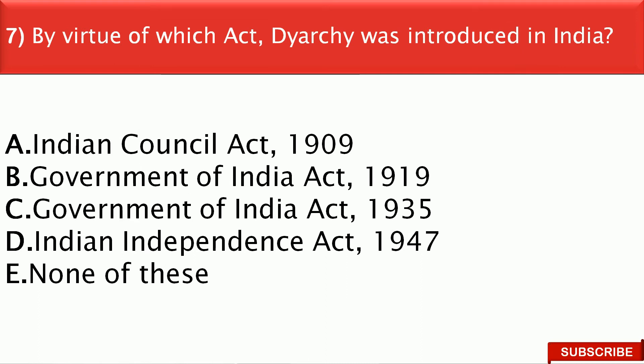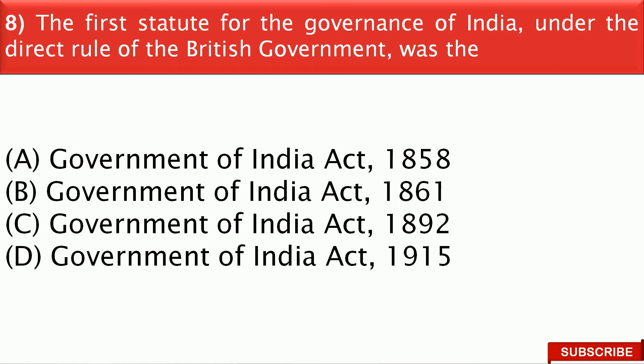Next question: By virtue of which act was Dyarchy introduced in India? The right answer is option B — that is the Government of India Act 1919. Next question: The first statute for the governance of India under the direct rule of the British government was the — the right answer is option A, that is the Government of India Act 1858.